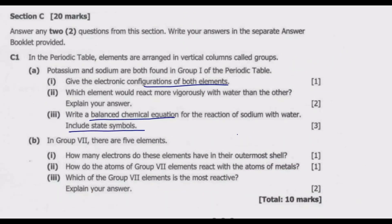We move to question B. In group 7 there are five elements. Roman numeral 1: how many electrons do these elements have in their outermost shell? The group number tells us the number of electrons in the outermost shell. So all of these group 7 elements have 7 electrons in their outermost shell.